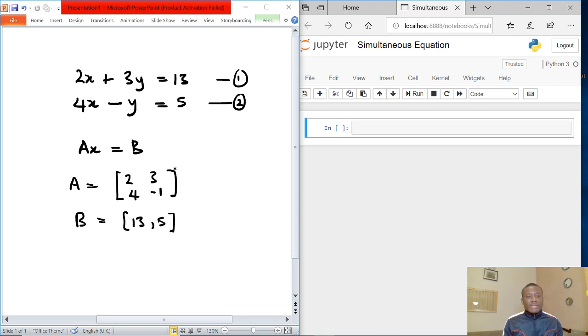And we can write b as 13 and 5. Now to represent this array in Python, we write it as two arrays in one, right? So you have [2, 3] and you have a second array [4, minus 1]. So basically this is what A is all about, and b remains exactly the same. Let's solve it in Python.